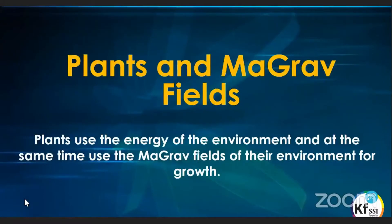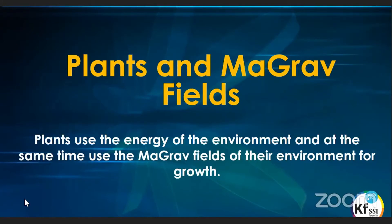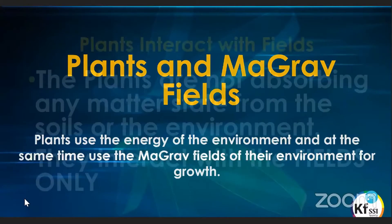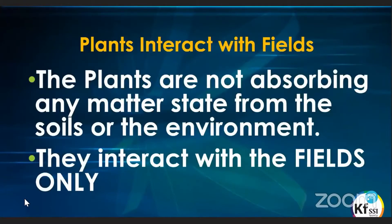Plants use the energy of the environment, and at the same time use the magnetical gravitational fields of the environment for their growth, for their energy. As we've discovered with the human body, we are only interacting with the fields from our food. The plants are not absorbing any matter from the soils or the environment — they only interact with the fields.